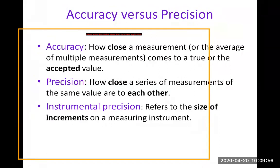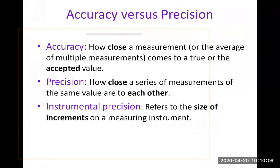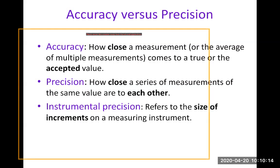So accuracy, by definition, is how close a measurement or the average of multiple measurements comes to the true or the accepted value. So let's say you know you should get a certain value when you measure something, and if you're able to get a measurement very close to that true value, accepted value, then you are accurate.